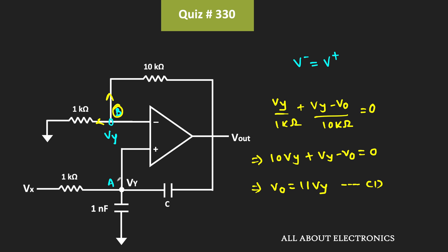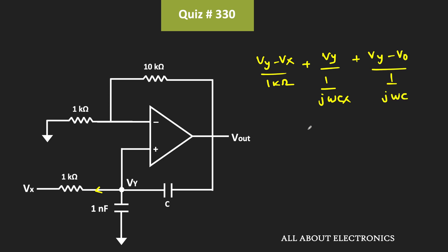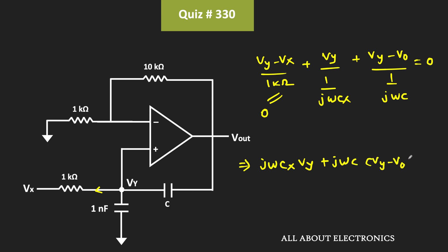Similarly, now let's apply the KCL at node A and let's say this capacitor is equal to Cx. Applying the KCL at this node, we can write: Vy minus Vx divided by 1 kilo ohm, plus Vy divided by 1 over jωCx (the reactance of the 1 nanofarad capacitor), plus Vy minus Vout divided by 1 over jωC (the reactance of capacitor C), and the summation of all these currents should equal 0. Now since we need Vy equal to Vx, the first term equals 0.